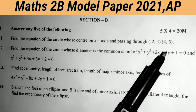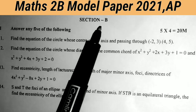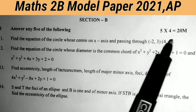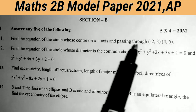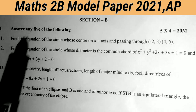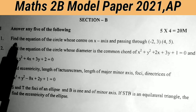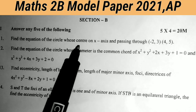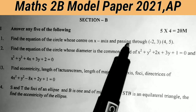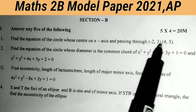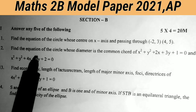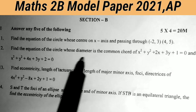Coming to Section B: we have 7 questions and must attempt only 5. Each carries 4 marks, so 5 × 4 = 20. There is internal choice — answer any five. Eleventh question: find the equation of the circle whose center lies on the x-axis and passes through the points (−2, 3) and (4, 5). Important sum.